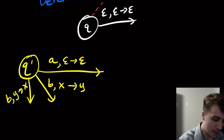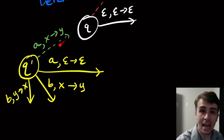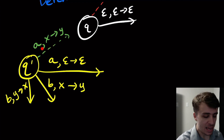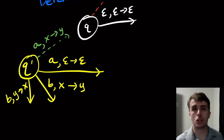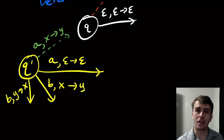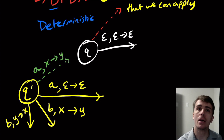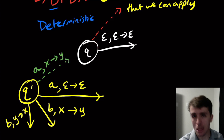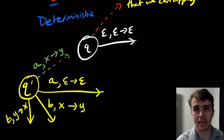If I try to add any other transition that involves an A — say one that pops an X and pushes a Y — then if I have an A on the input and an X on the stack, I can apply both transitions, which is not allowed. So what we need is that for every state, for every possible input character and thing to pop, there's exactly one transition to apply every single time. That's what we call a deterministic PDA — it behaves like a normal PDA, except with restrictions on the transitions out of each state.